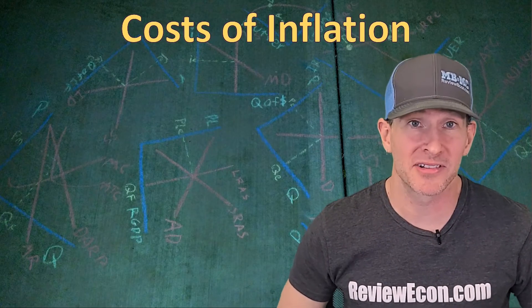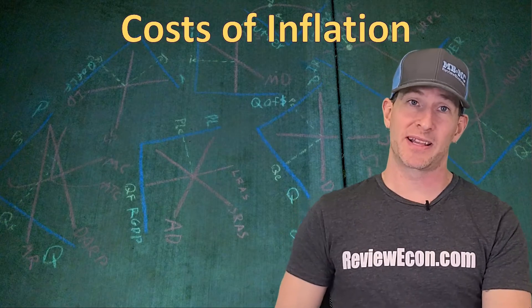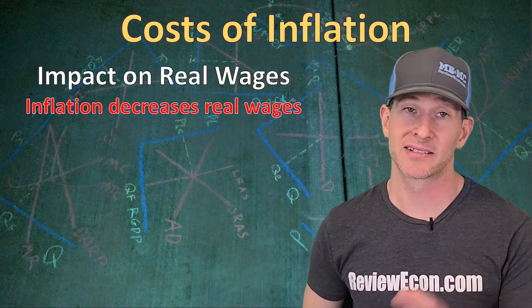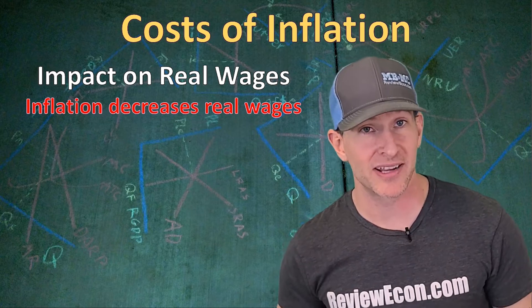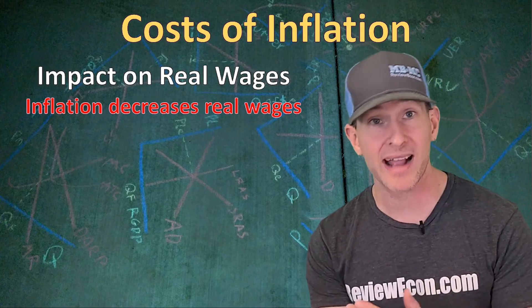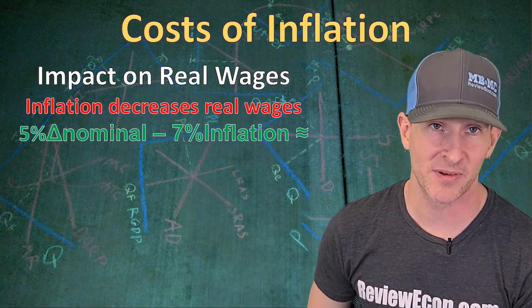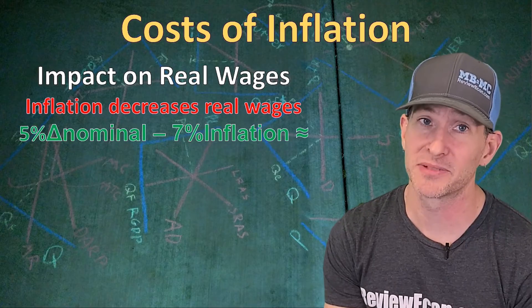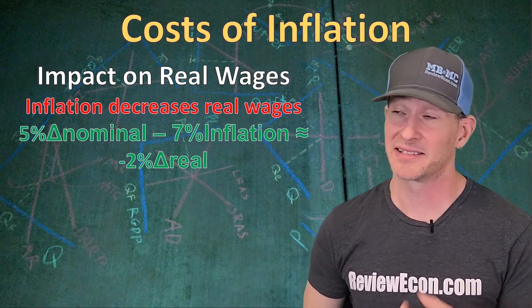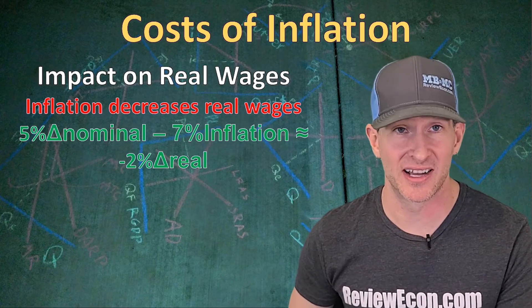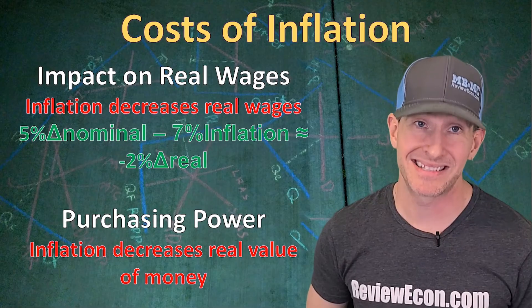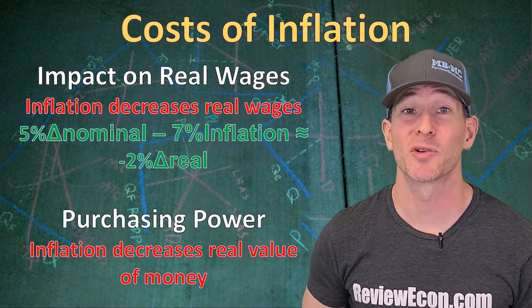Why does it matter that prices are going up? Inflation has real costs. The first big impact is on real wages — when we have inflation, the real value or purchasing power of wages decreases. For example, if I get a nominal wage increase of 5% but inflation is 7%, my real wage change is 5% minus 7%, which is actually a 2% decrease. Inflation changes the purchasing power of money — its ability to buy goods and services — and inflation decreases that real value.